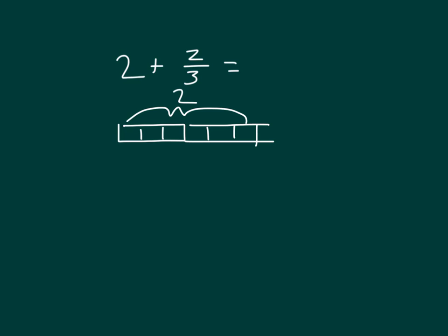And so, we need to add 2 more thirds to those 2 wholes. There's 1 more third, and there's another third. And we'll label that portion as well. So here we have 2, with 2 thirds, equaling 2 and 2 thirds.